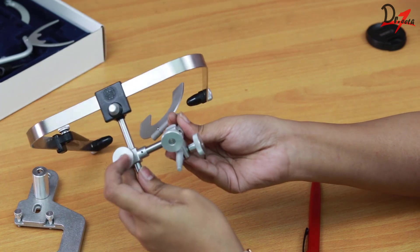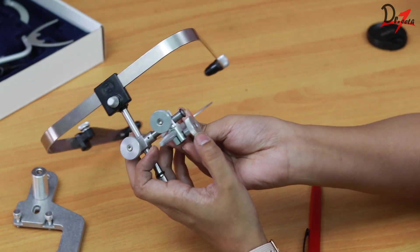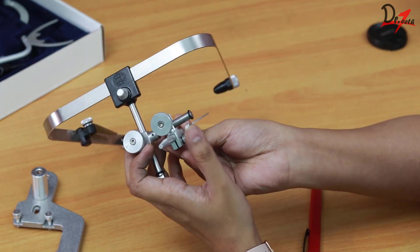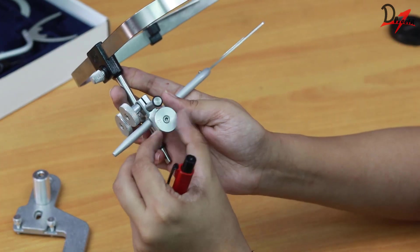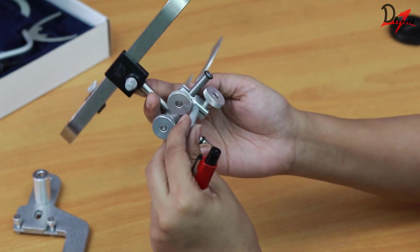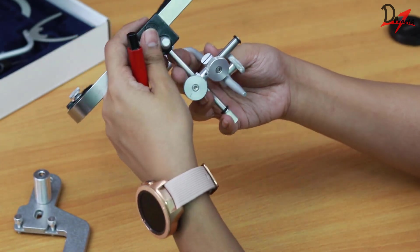So just put the bite fork inside and align it according to requirement and then lock it. I'm locking thumbscrew three first so that my bite fork does not fall, because I don't have a patient to bite on it and stabilize it. But the sequence usually is one, then two, then three. Remember that.